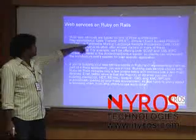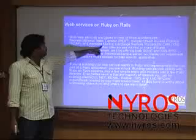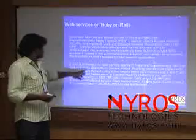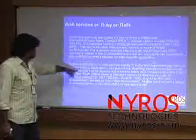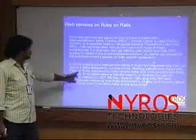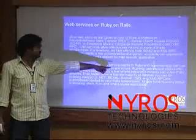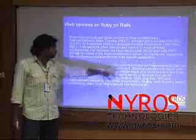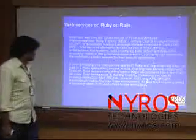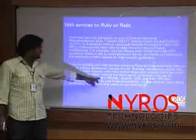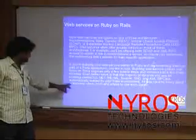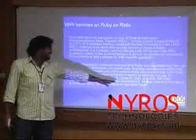Using these three architectures, we will implement for the client's needs. If you are building your web service clients in Ruby and implementing them as part of a Rails application, building web service clients with Ruby on Rails requires only a few simple steps and involves just a few Ruby libraries. The majority of libraries — CGI, Net, REXML, SOAP4R, XSD, and XMLRPC — are automatically loaded by your Rails environment.